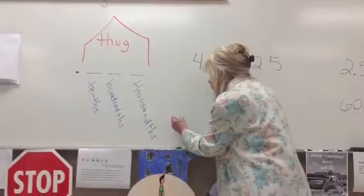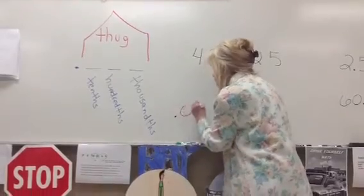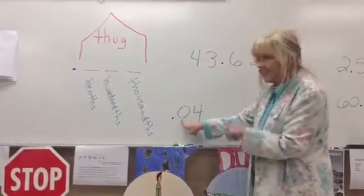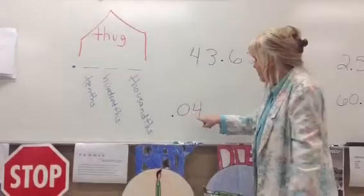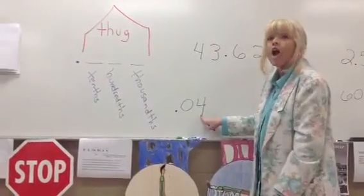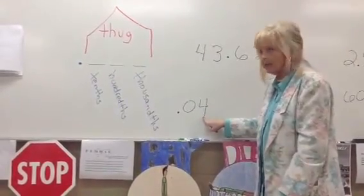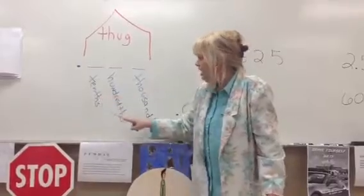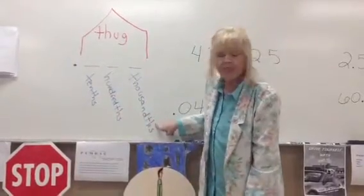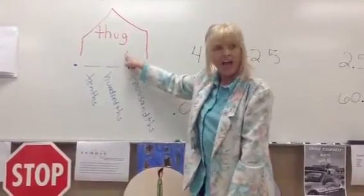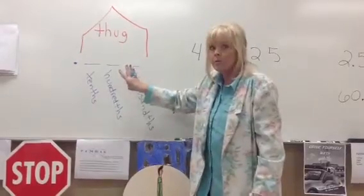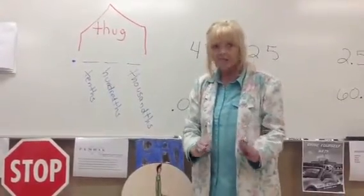So if you have .04, you say: okay, that's the tenths place, that must be the hundredths place. That is read four-hundredths. Notice they all have the 'th' ending — so it's called the 'th house.' Everybody to the right of the point is in the 'th house.'